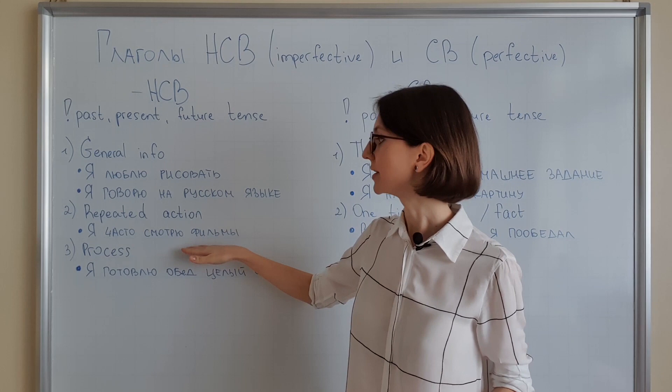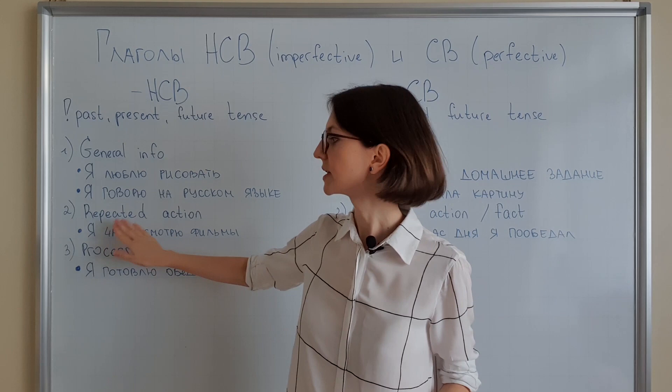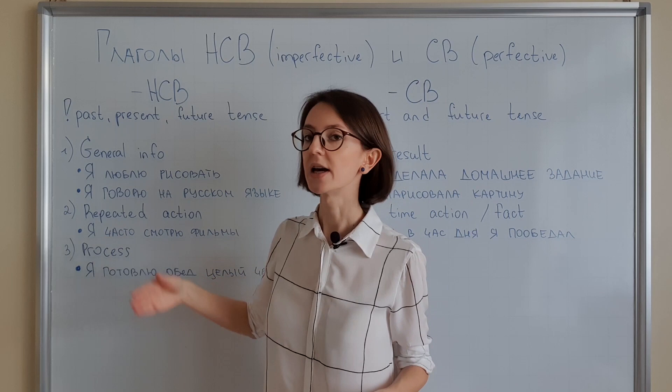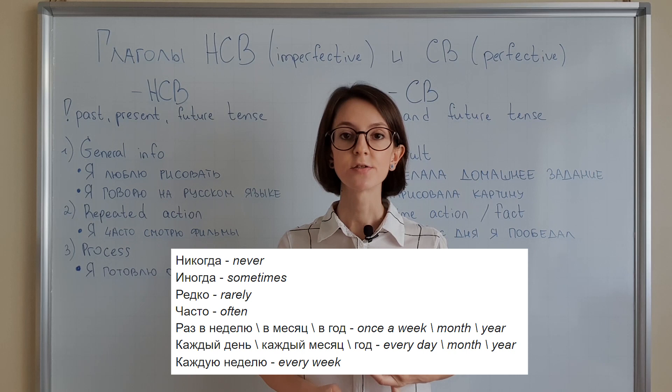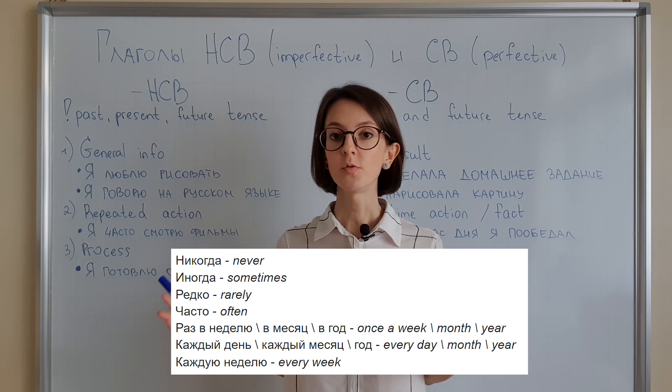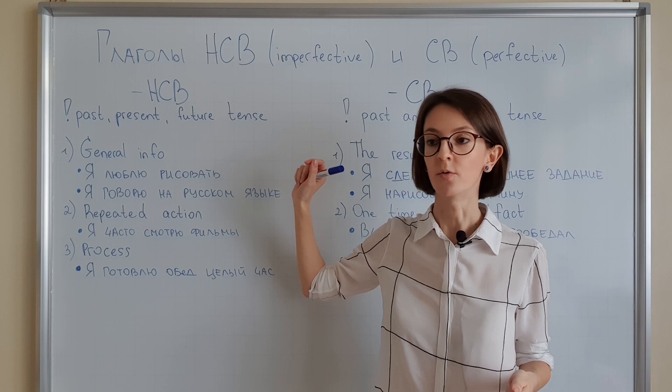For example: я часто смотрю фильмы (I often watch movies). Sometimes you can skip 'часто' — just я смотрю фильмы. But if you want to specify that you often watch movies: я часто смотрю фильмы. Words like редко, иногда, никогда, один раз в год, два раза в месяц — all these words will indicate that you need to use an NSV verb.